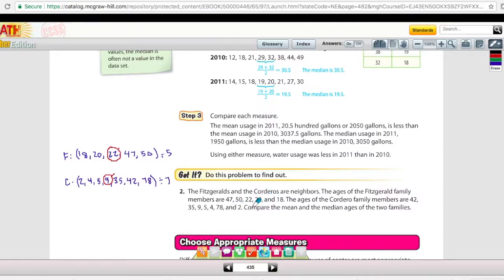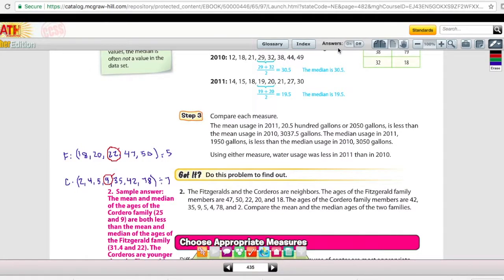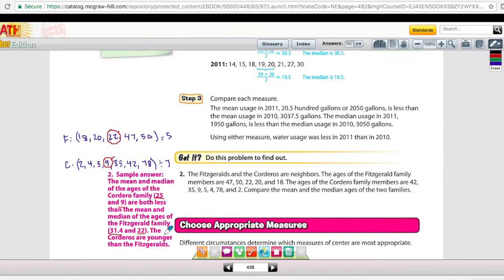So what you need to do is go ahead and list that the Corderos family's median is nine and then the mean is 25. The Fitzgeralds' mean is 31.4 and their median is 22. So in both cases, the Corderos are younger based on their mean and their median.